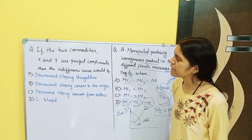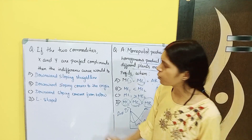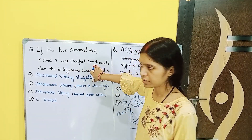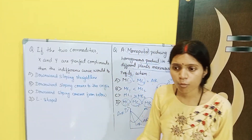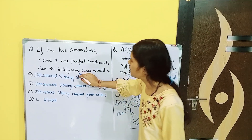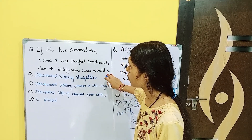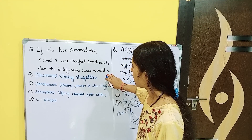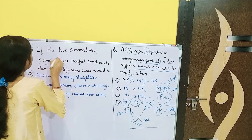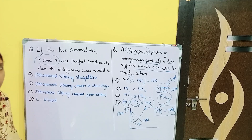Next question: if two commodities X and Y are perfect complements, then the indifference curve would be what? So if you have two commodities X and Y that are perfect complements — complementary goods — then the indifference curve would be?